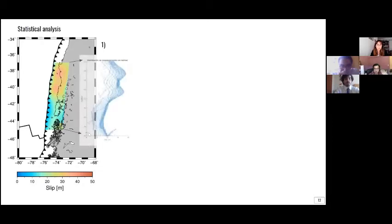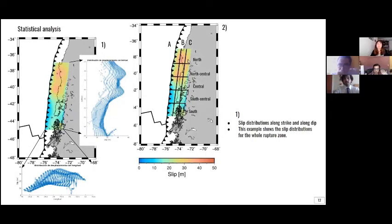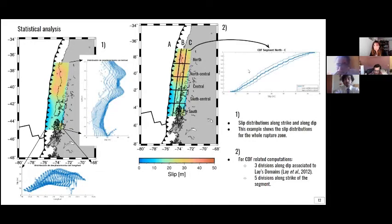First, with the statistical analysis, we will perform an analysis of the displacement distribution along latitude or along strike, and the displacement distribution along dip or with longitude. Then, we will divide the rupture zone in different segments following Armignaul 2021. For this proposed methodology and up until this moment, we are proposing three divisions along dip, associated with lace domains, and five divisions along strike: north, north-central, central, south-central, and south. And for each one of these segments, we will compute the CDF. The CDF will then be compared with the known and published models of the 1960 Earthquake.